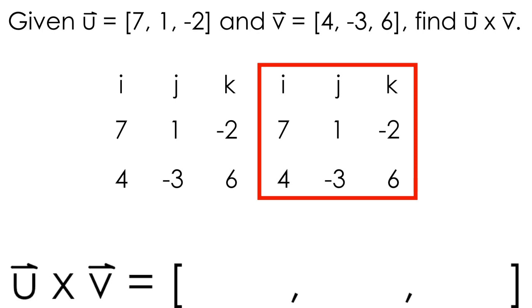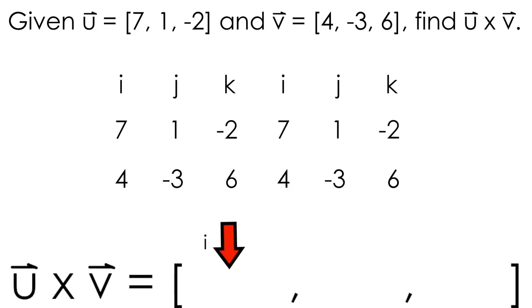This list of values is going to help us find the cross product for u and v. We know that the cross product is going to give us a vector in the end, so we're going to start by finding the i component of our vector.